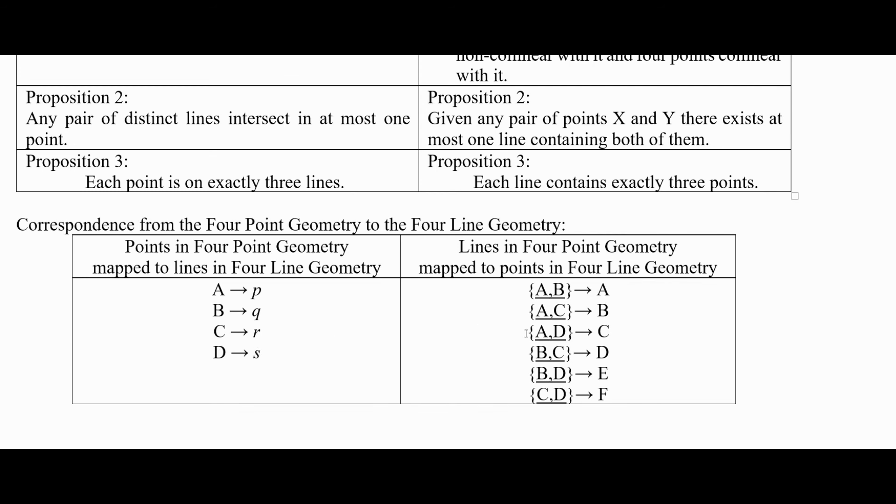if you kind of go backwards, if you take the lines, the lines over here and go back to the points, line AB goes to point A, line AC goes to point B, and so forth. So lines in one go to points in the other, and vice versa.